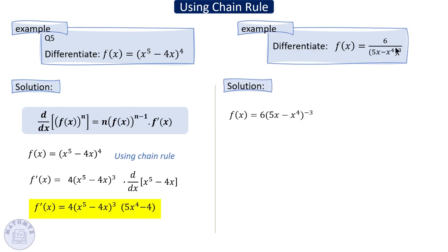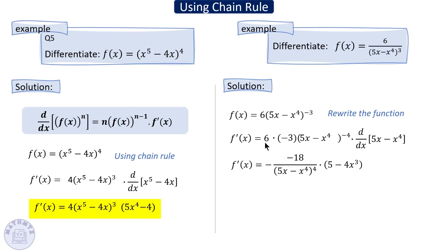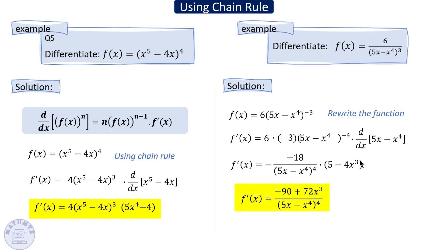Take the derivative of the outside function: bring down the six, drag the negative three down — giving negative three minus one equals negative four. Simplify: six times negative three is negative 18, and the negative power becomes positive in the denominator, times the derivative of the inside which is 5 minus 4x cubed. Multiplying gives the final answer.